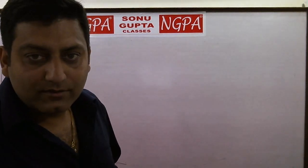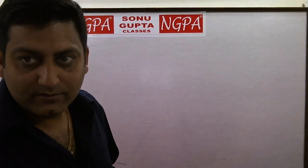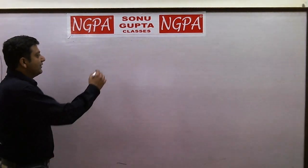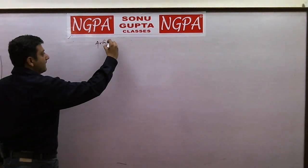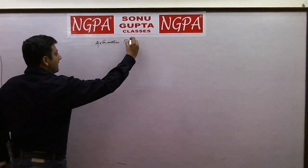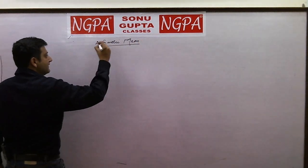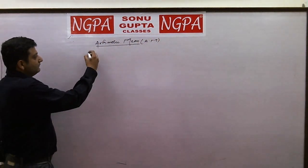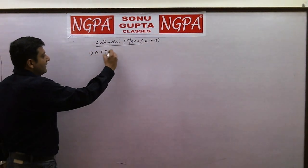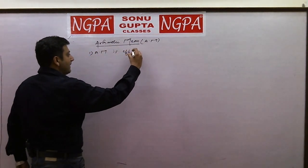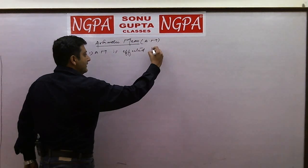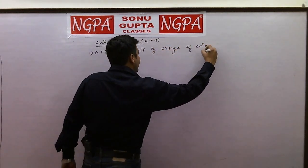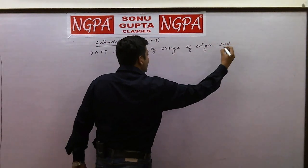Myself is Jatin Chopra and I am going to teach you one of the important properties of arithmetic mean, that is AM is affected by change of origin and change of scale.